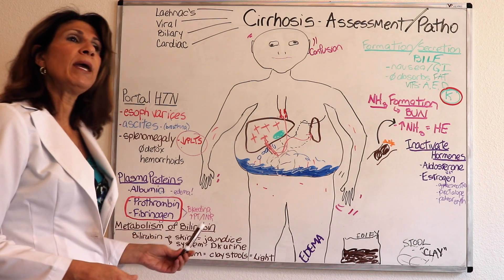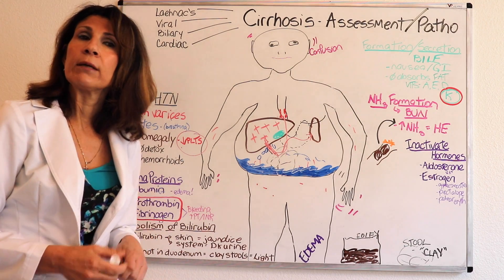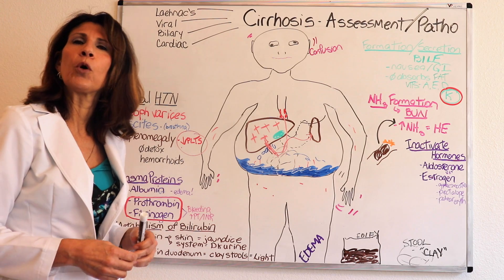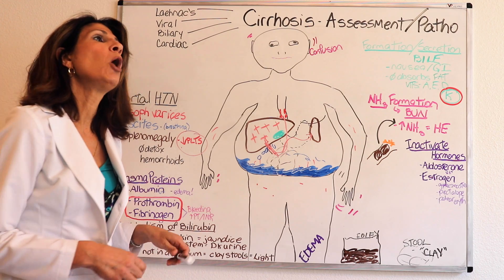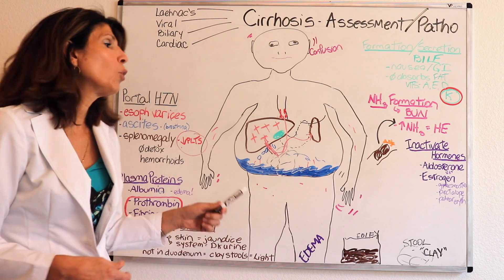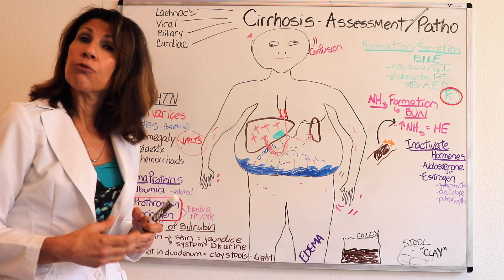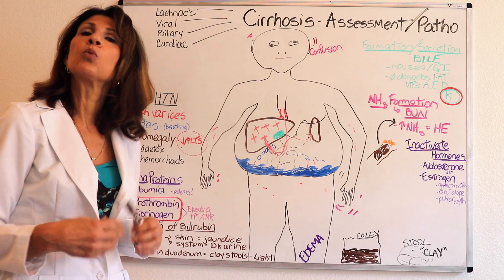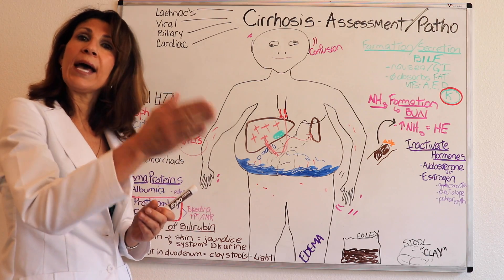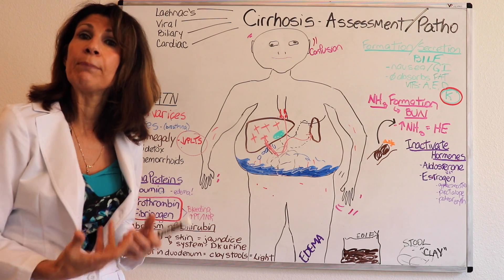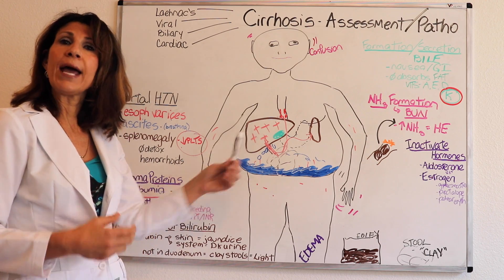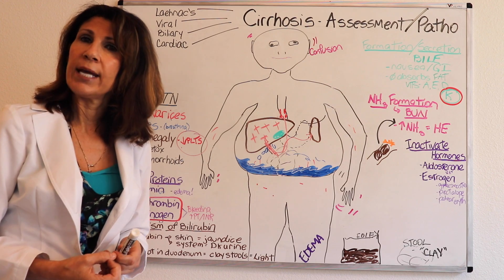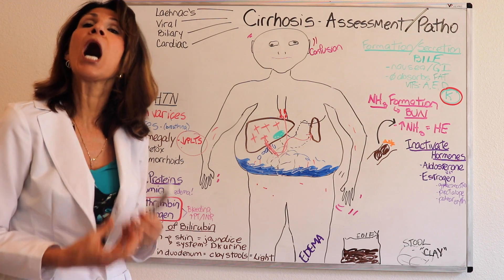Normally, bilirubin — a product of the breakdown of old red blood cells — travels to the liver in its unconjugated form, also called the indirect or protein-bound form. In the liver it goes through the conjugation process, where bilirubin is made into a water-soluble form so it can pass over the hepatocyte in order to make bile. After the liver has made bile from the breakdown of old bilirubin, it is in a conjugated form, called direct bilirubin or conjugated bilirubin.